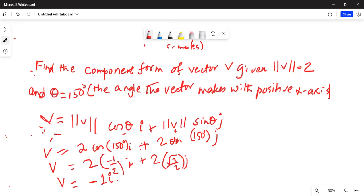Minus 1 i plus 2 in the numerator cancels with numerator 2 and we get square root of 3 j. Or we can write it as vector v is equal to minus 1 comma square root of 3 in the vector notation.